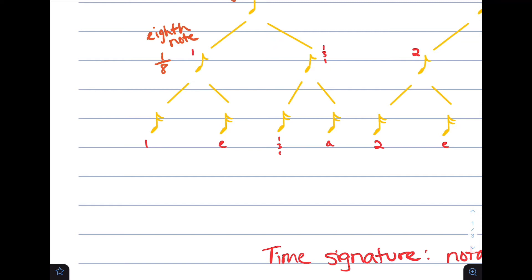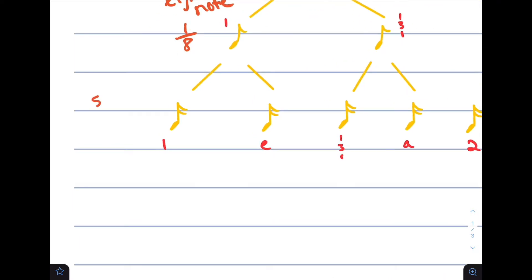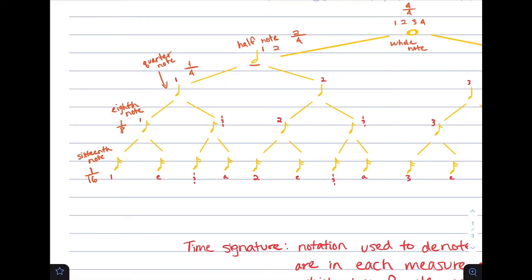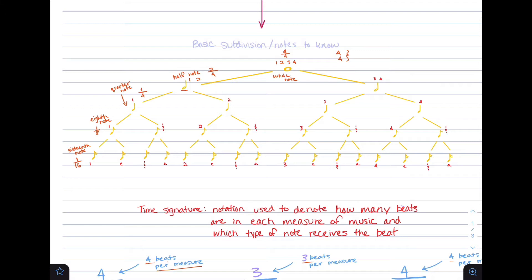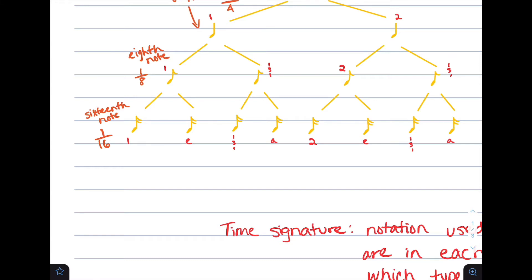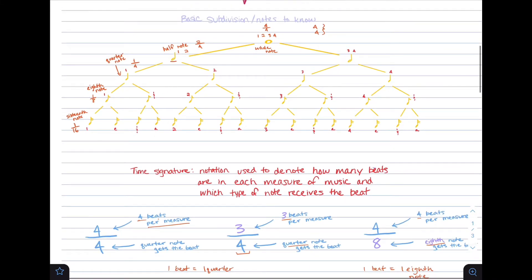An eighth note can be split into two sixteenth notes, which is denoted by two flags on the stem instead of just one. This is worth one sixteenth of the whole note. There are four sixteenth notes in one beat, since a quarter note is worth one beat. That means there are 16 sixteenth notes in four beats.